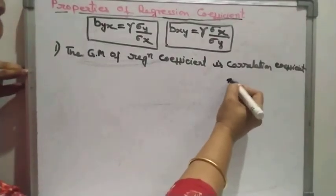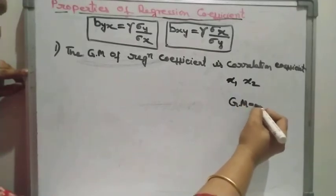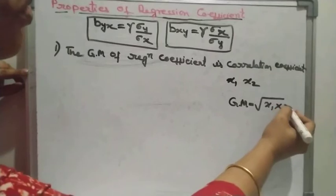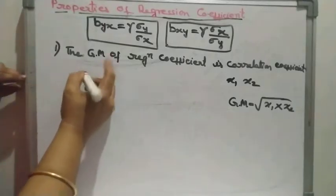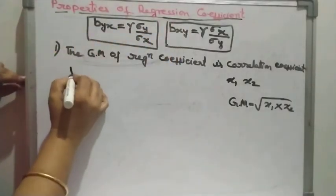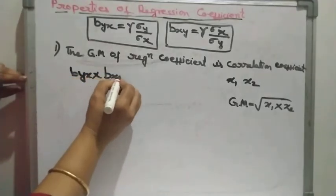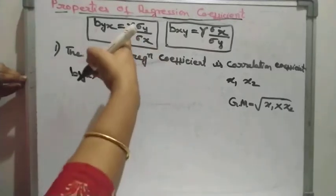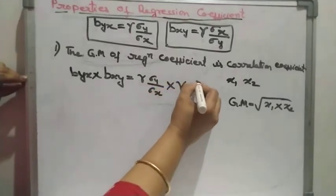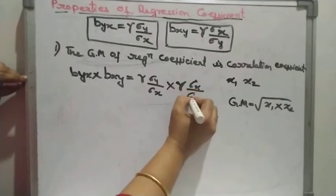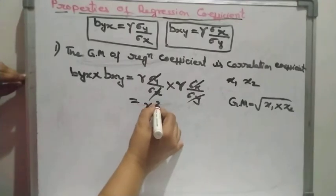As we know, when there are two values x1 and x2, the geometric mean is: GM = √(x1 · x2). So we need to multiply the two regression coefficients: b_yx · b_xy = (ρ · σ_y / σ_x) · (ρ · σ_x / σ_y).